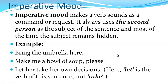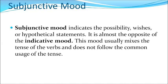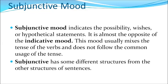Now we shift to subjunctive mood, the very essential one. Subjunctive mood indicates possibility, wishes, or hypothetical statements — three key qualities of the verb. It is almost the opposite of the indicative mood. Importantly, this mood mixes the tense of the verbs and does not follow the common usage of tense. We will discuss the reasons through the examples.